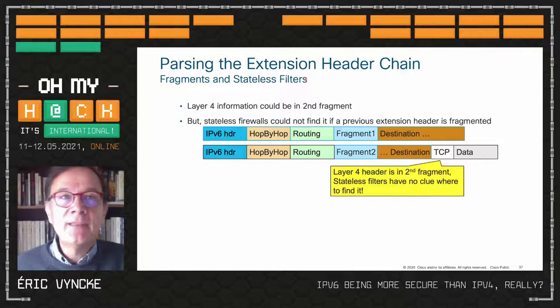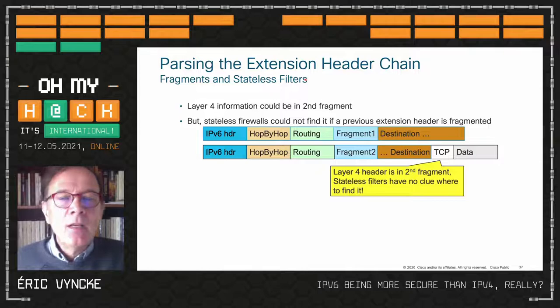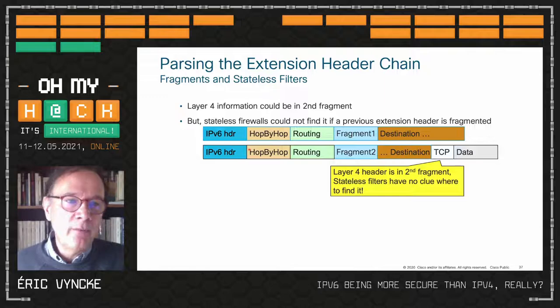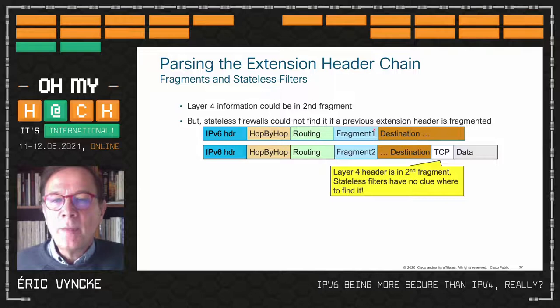Fragmentation has been used by attackers in IPv4 to confuse stateless firewalls — they have no state so they don't remember previous fragments. This works in IPv6 too, but with IPv6's extension header chain we have something more. For stateless filters — routers or Layer 3 switches just trying to block Telnet or allow SSH — we have two fragments, each with the IPv6 header and a fragment header signaling reassembly is needed.